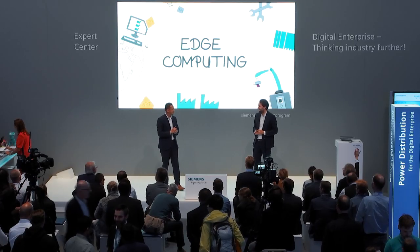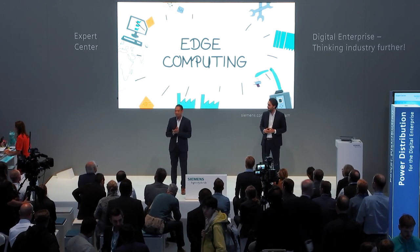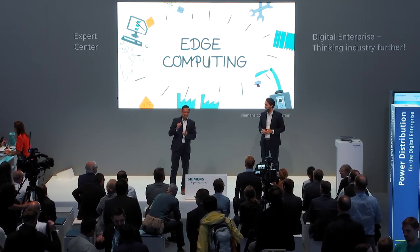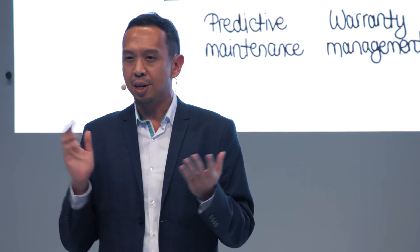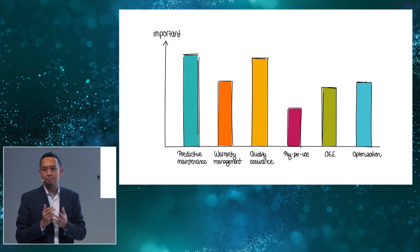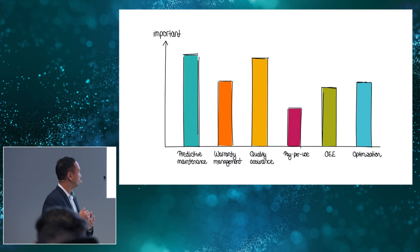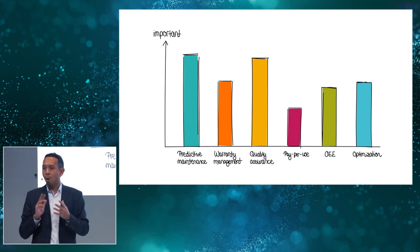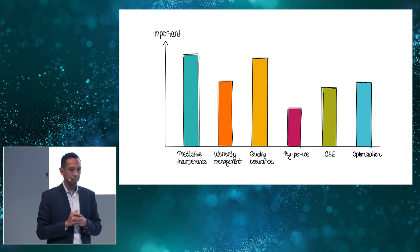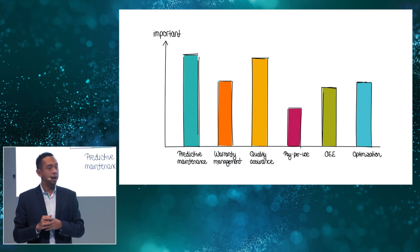Yes, who knows edge computing? Please hands up. Not bad. And who has already implemented edge computing? Okay. So you are right here. Today we will show you how you can implement edge computing. But what are the most important use cases? We have interviewed and this is the result. How about predictive maintenance at your site, about quality assurance. Our survey showed that predictive maintenance is the most important use case in edge computing. Today we have an example in our factory in Amberg.